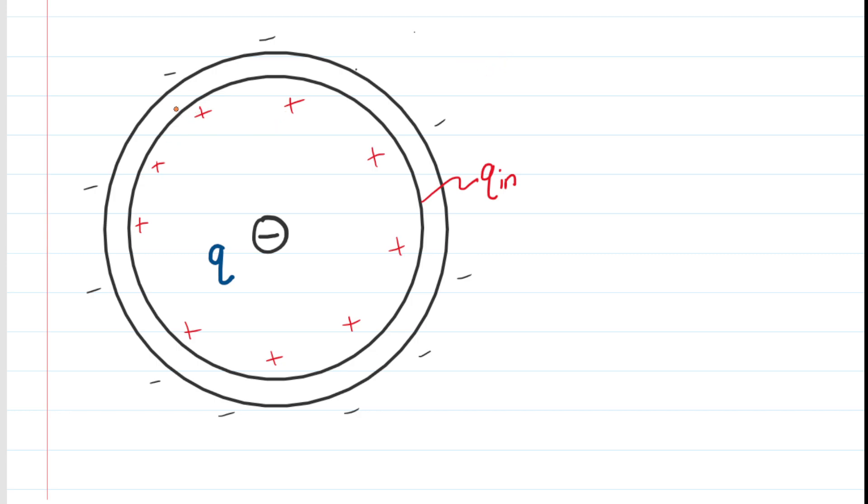Now, what we're going to do in this problem is we're going to actually draw our Gaussian sphere using a dotted line placed on the inside of this sort of thin region of the conducting shell. So we're going to draw, again, this Gaussian sphere on the inside of the conducting shell. And you might wonder, well, why? Why would we draw it on the inside?